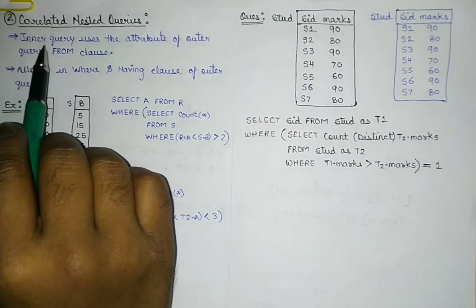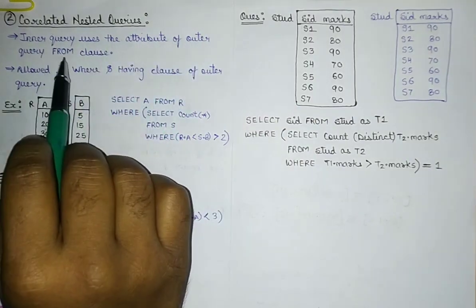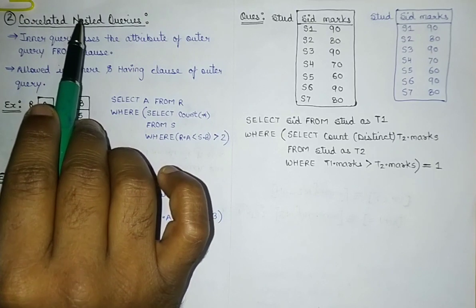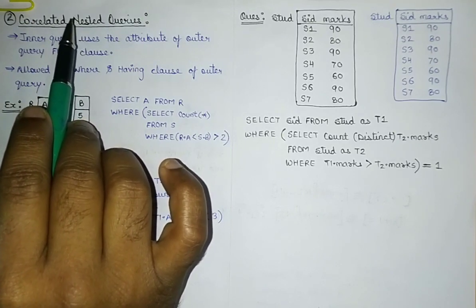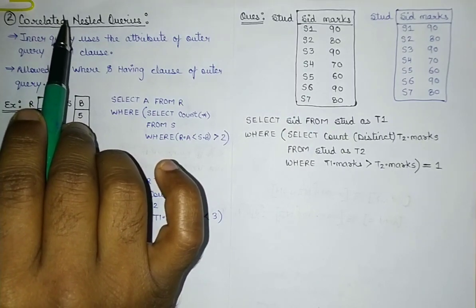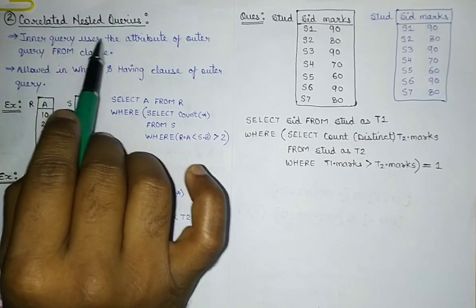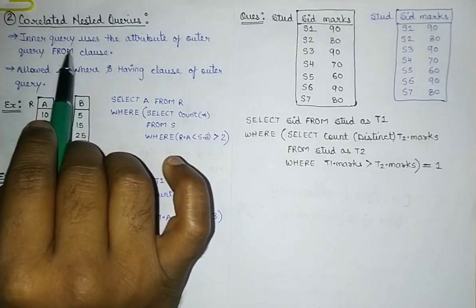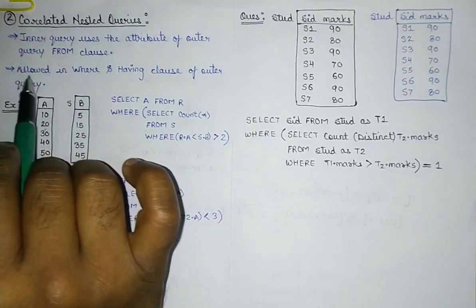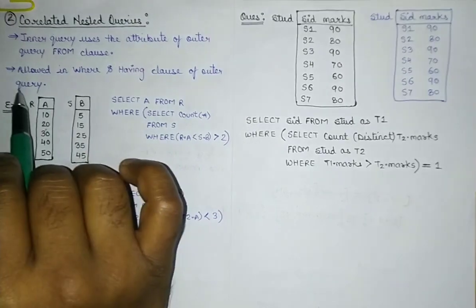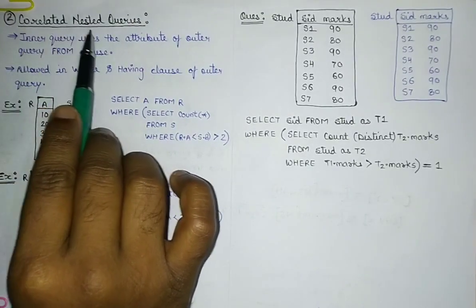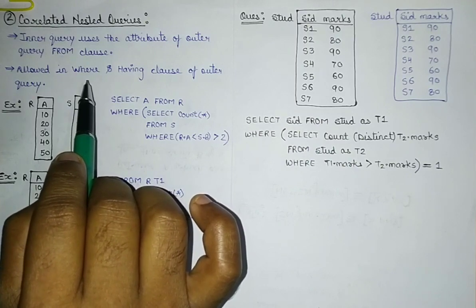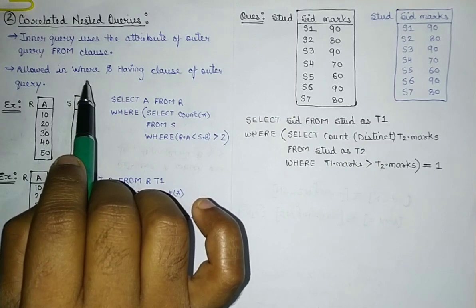So let's start with this second part of nested queries: correlated nested queries. The inner query uses an attribute of the outer query's FROM clause. There has to be some relation between the two sub-queries. It is allowed in the WHERE and HAVING clauses of the outer query, meaning we can write the correlated nested query in place of conditions in those clauses.